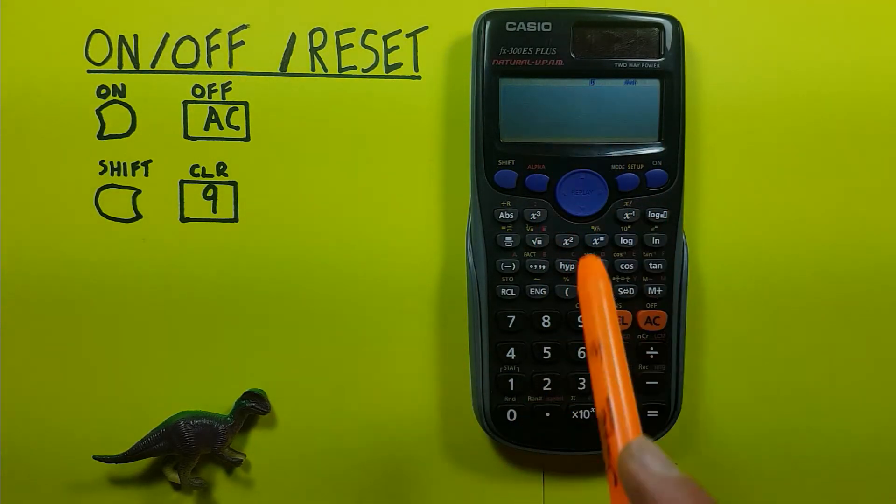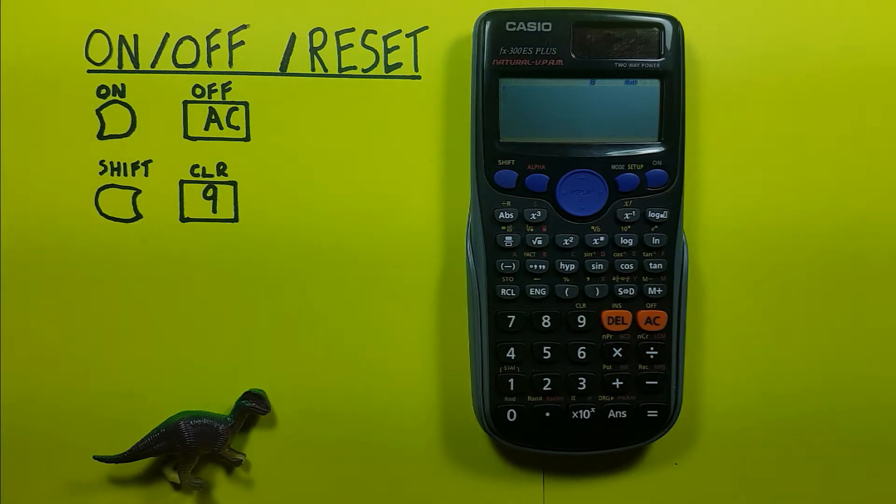You can see we're no longer in the stat mode. This works for any time you have some sort of weird mode in your calculator that you don't know how you turned it on and want to go back to the basic calculation mode.